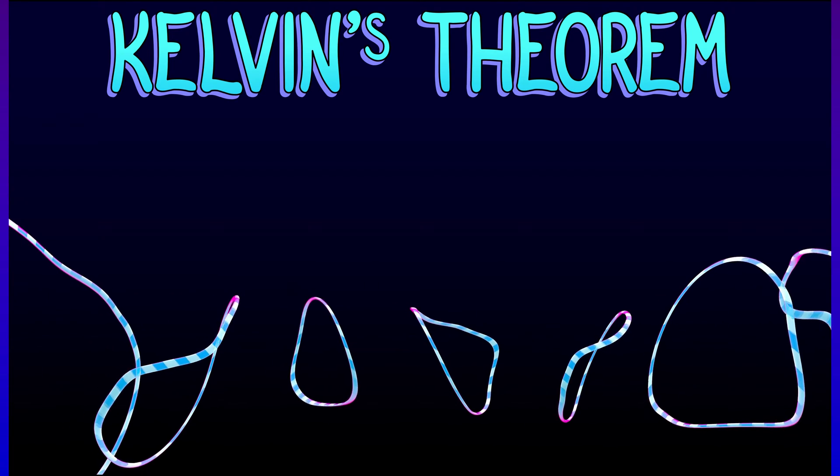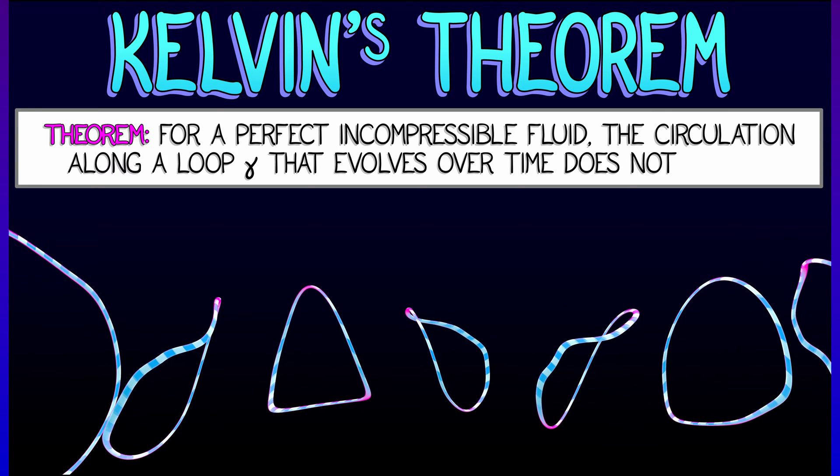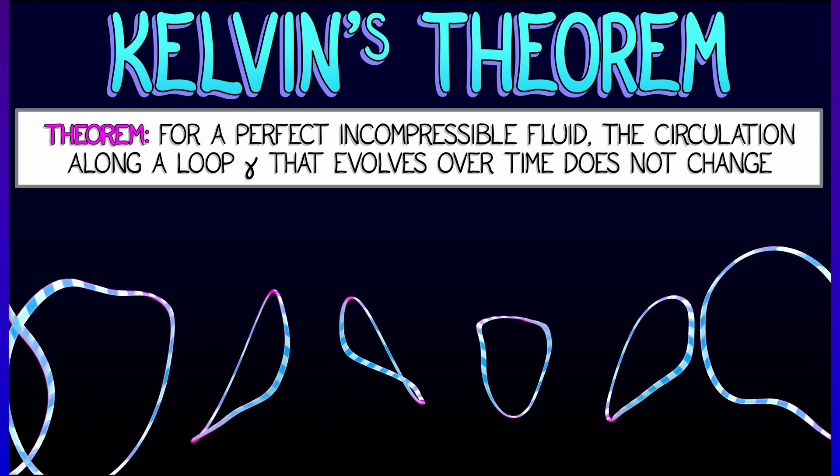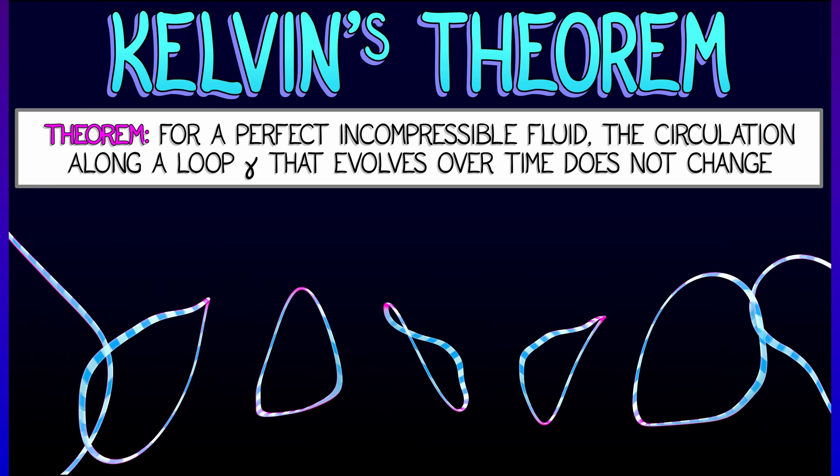Kelvin's theorem says that if you've got a perfect incompressible fluid, then the circulation along a loop gamma that is evolving over time with the fluid is fixed. It does not change. It is constant.